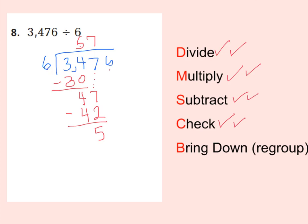Now we can bring down our 6 ones. Remember, we have 5 tens and 6 ones, which equals 56 ones. So divide again: 56 ones divided into 6 groups — that's going to be 9 per group, because 9 times 6 is 54. And when you subtract, you're going to have 2 as your remainder.